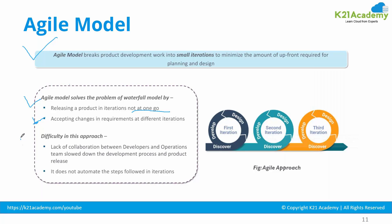Although application development is split into iterations in agile, there is still a lack of collaboration between developers and the operations team, which slows down development and product release. Several years back there was a separate development team — Java developers, .NET developers, Node.js developers — who would just develop the application and hand it off to the ops team. Due to lack of collaboration, the ops team would deploy the application without full awareness of what the developer had done, which could lead to errors during deployment.